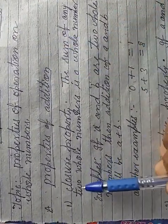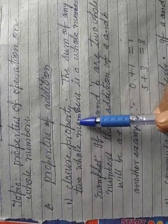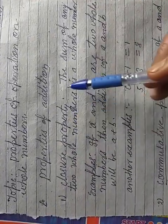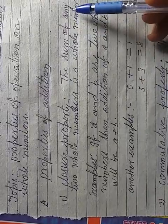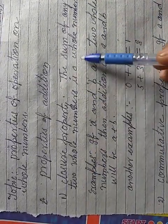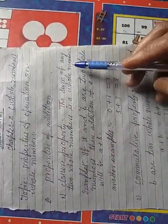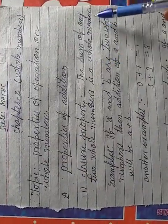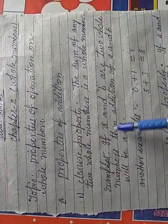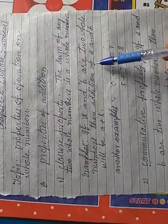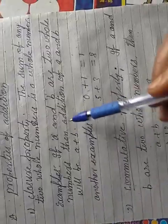So first property is closure property. The sum of any two whole numbers is a whole number. Examples, if a and b are two whole numbers, then additions of a and b will be a plus b.